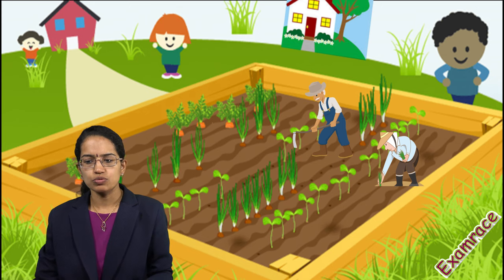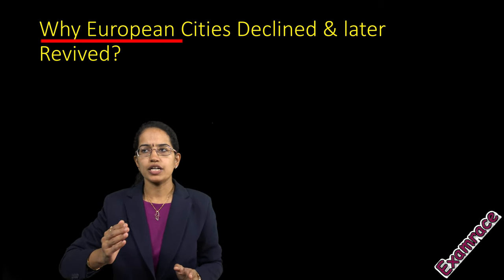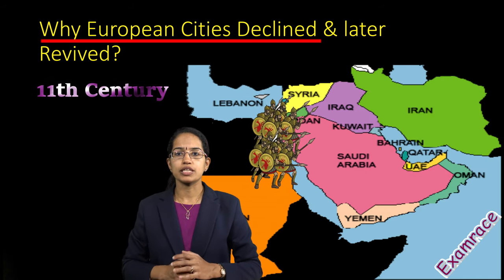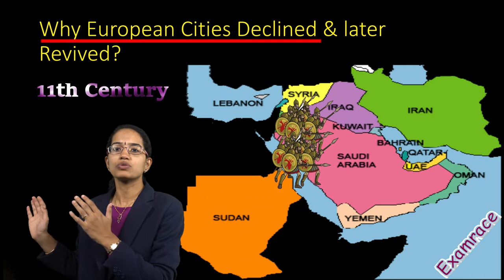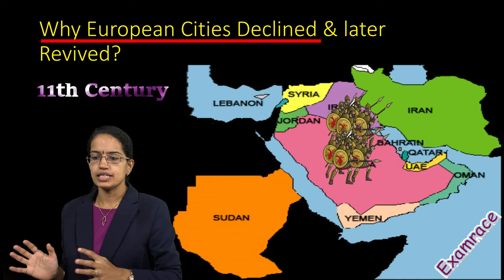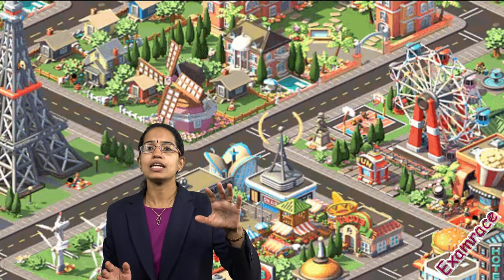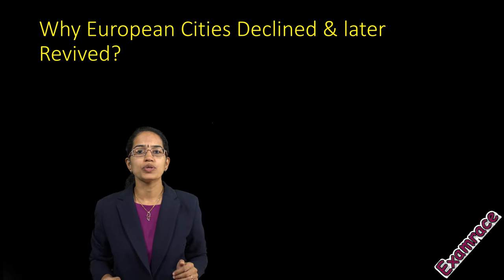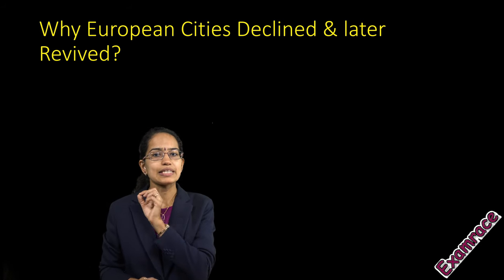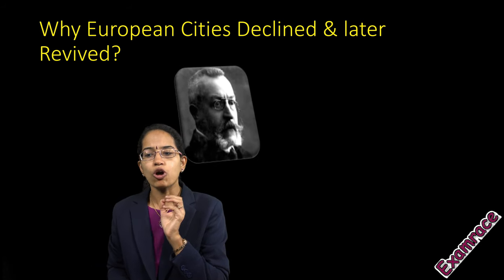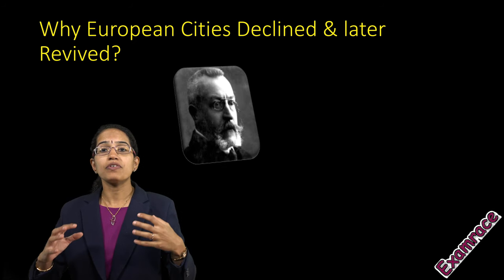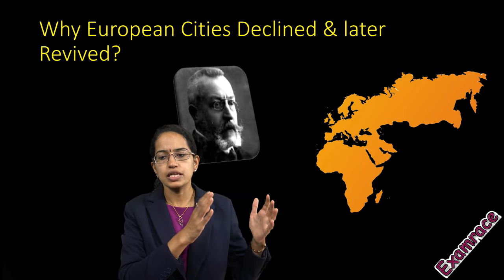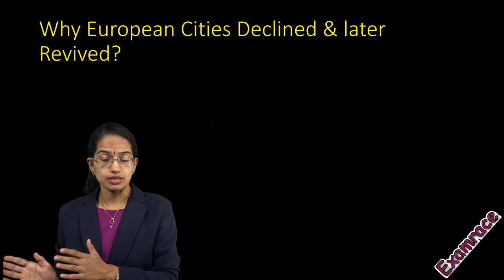Everything produced was consumed within the region. However, during the 11th century, the Crusades happened and Arabs were pushed back to the Near East. As a result, trade and cities in Europe revived again. There was a decline in the feudal system. This was the basic idea Pirenne talked about — a kind of irreconcilable opposition that existed between trade and urbanization on one side, and feudalism on the other.